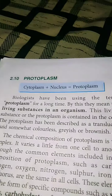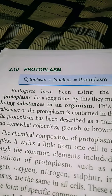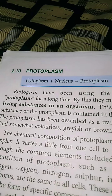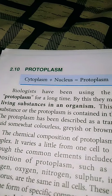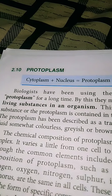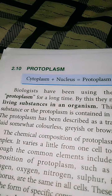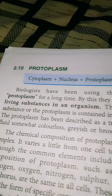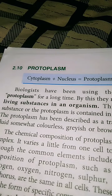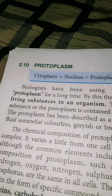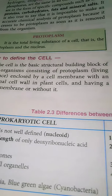Now we come to one of the last terms in this chapter — protoplasm. Protoplasm means the entire living substance in an organism, especially inside the cell. The cytoplasm and nucleus together are called protoplasm. You may get a question like: differentiate between cytoplasm and protoplasm. Cytoplasm is the jelly-like fluid present inside the cell membrane and outer to the nuclear membrane, but protoplasm is the entire content inside the cell membrane — including both cytoplasm and nucleus.